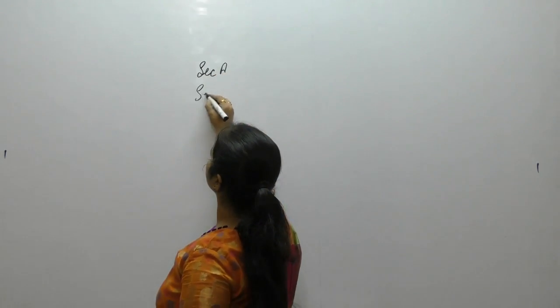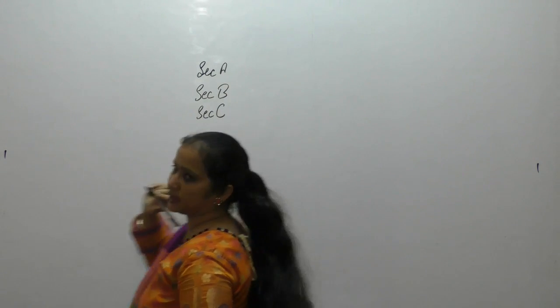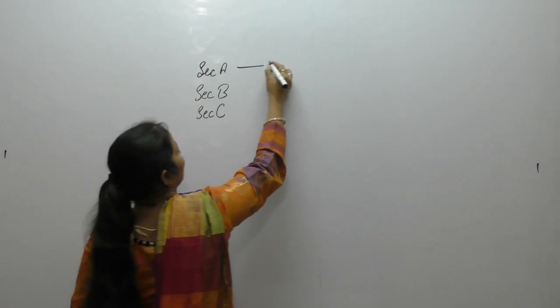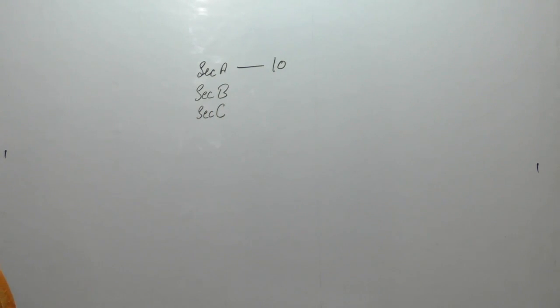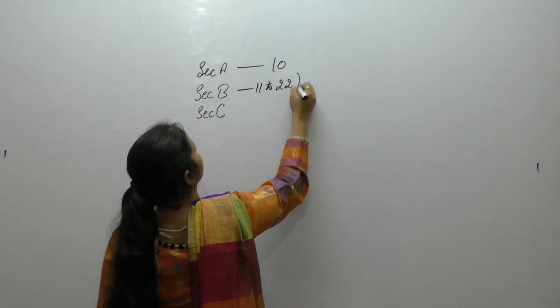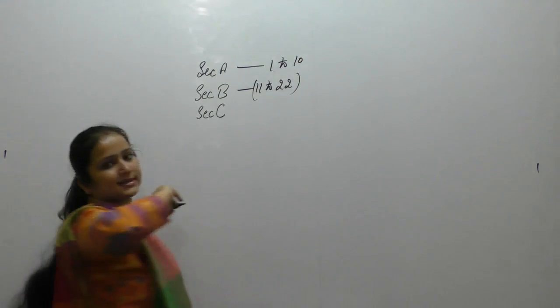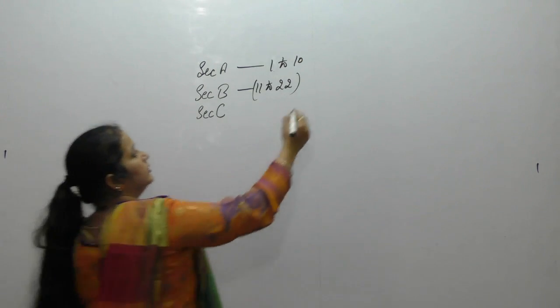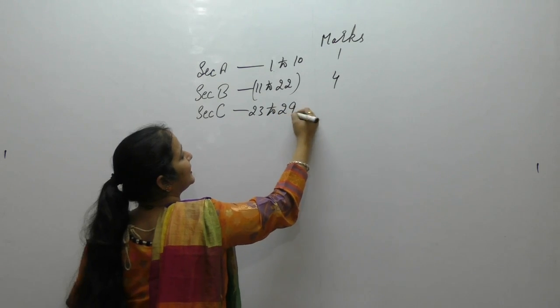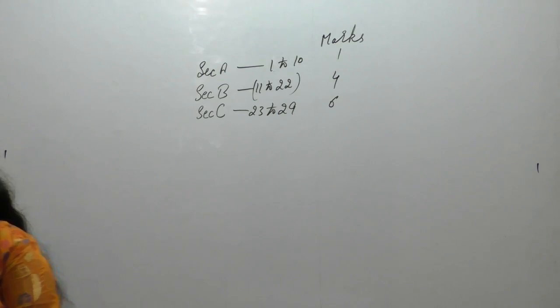In this exam, Section A, B and C are divided into three parts. Section A, B and C — we have 10 questions from 1 to 10, worth 1 mark each. Then questions 11 to 22, which are 4 marks each. Then 23 to 29, worth 6 marks each. This is the pattern for the mathematics exam.